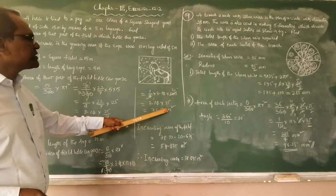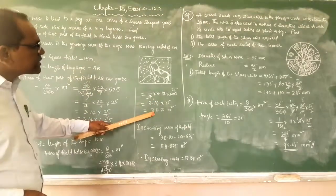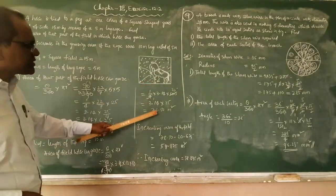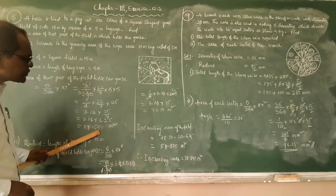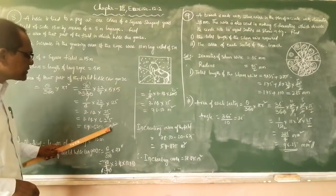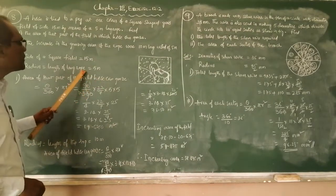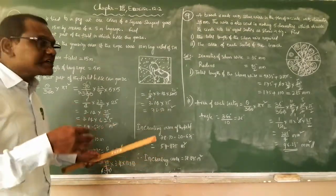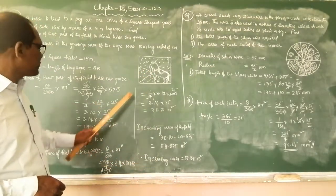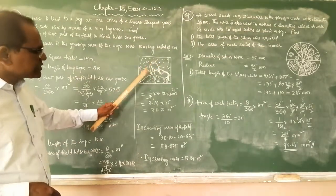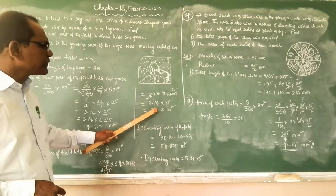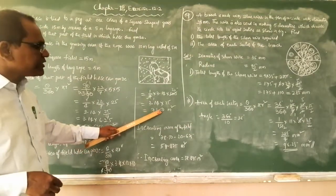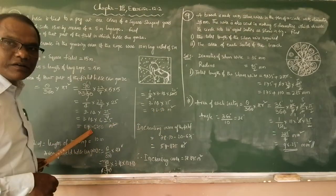The area grazed by the horse with rope length 10 meters is 78.50 square meters. With rope length 5 meters, the area was 19.625 square meters. How much is the increase? The increase in grazing area equals area with 10-meter rope minus area with 5-meter rope: 78.50 − 19.625 = 58.875 square meters.